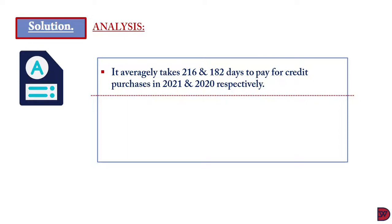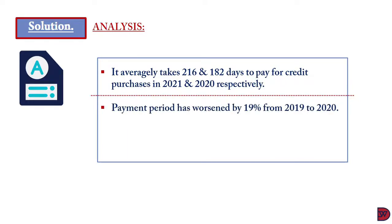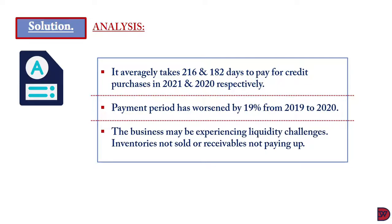GKA Limited took 216 days to pay its creditors in 2021 compared to 182 days in 2020 — a worsening of 34 days. We must investigate why: did the business have an extended agreement with payables? Did the goods not sell on time? Were receivables unable to pay? These factors would prevent money from coming in to settle payables. The rate of worsening suggests the business may be experiencing liquidity challenges.